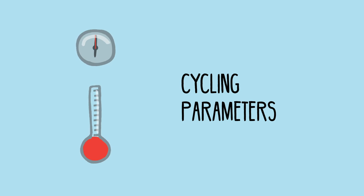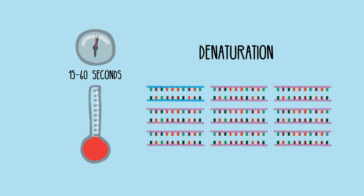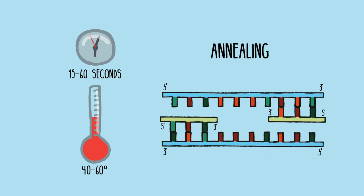PCR typically involves an initial DNA template denaturation step to separate the two strands, followed by repeated cycles of denaturation, primer annealing, and primer extension.